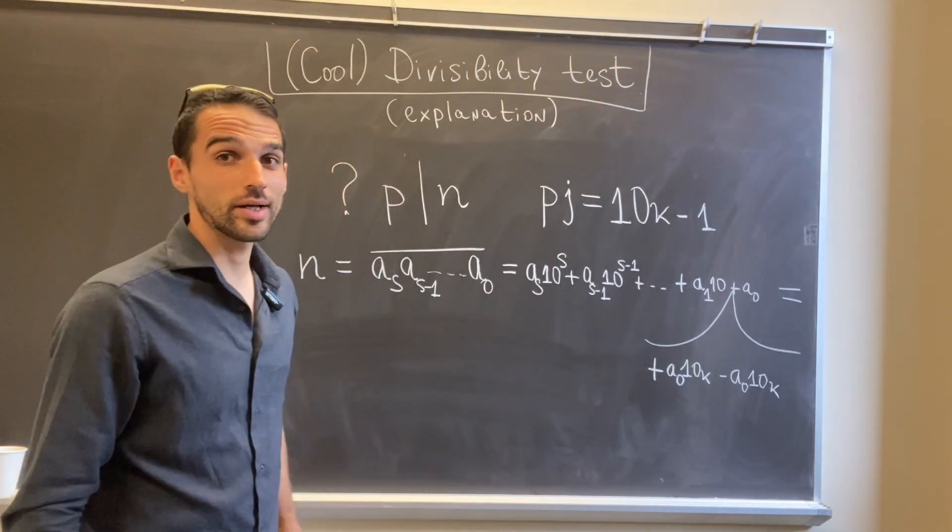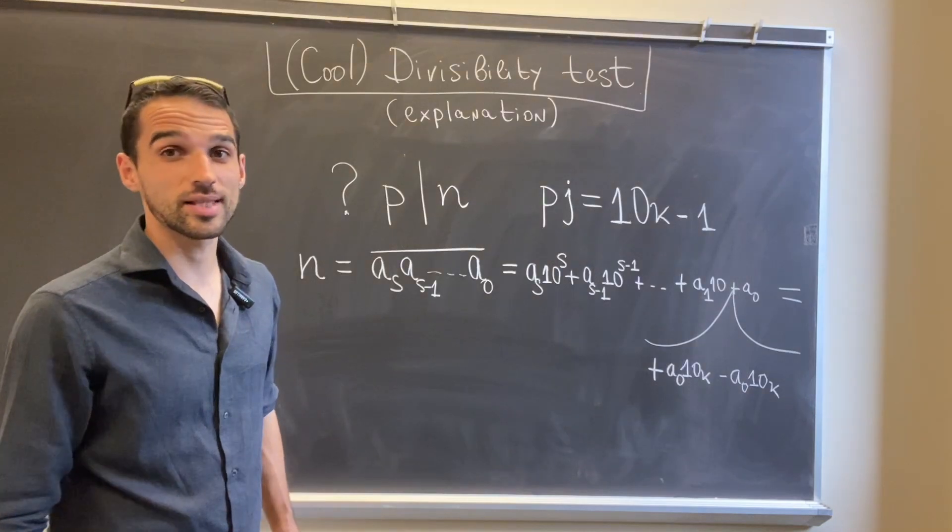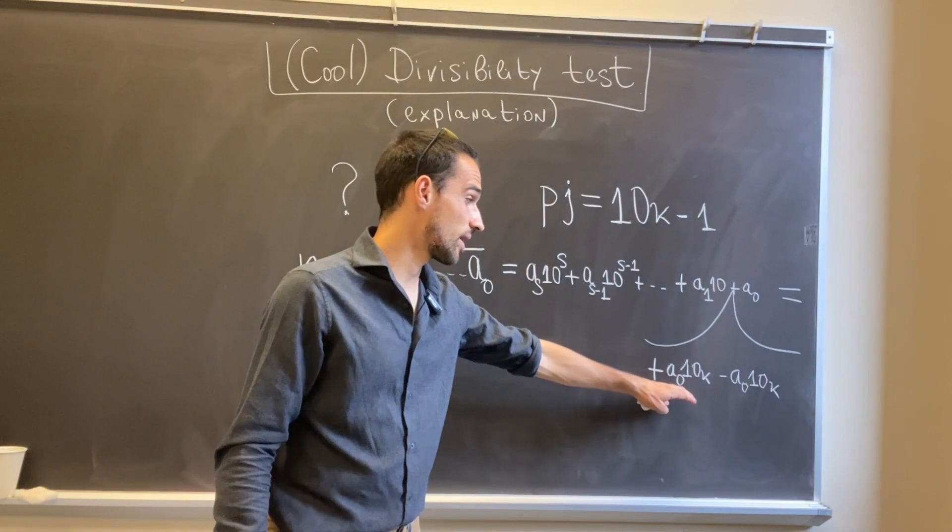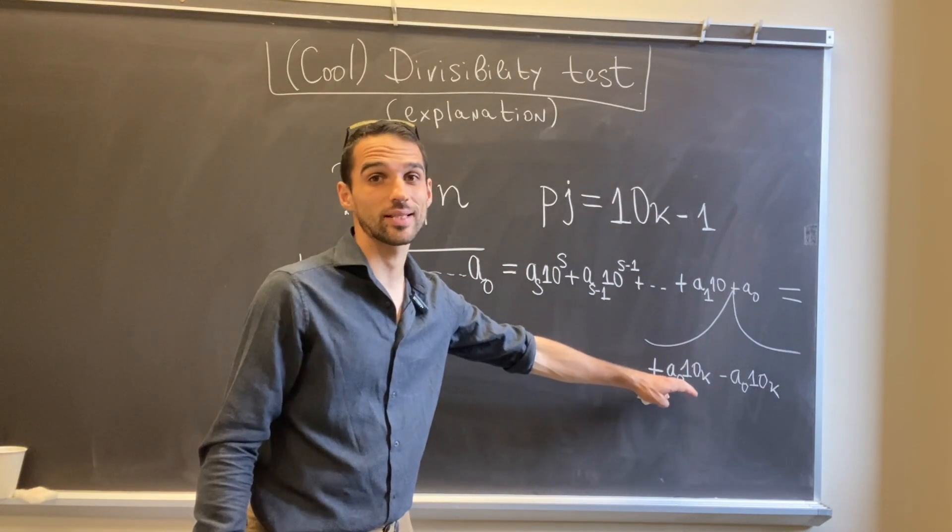Now it comes the important step. It's crucial that we can add and subtract a_0 times 10k.